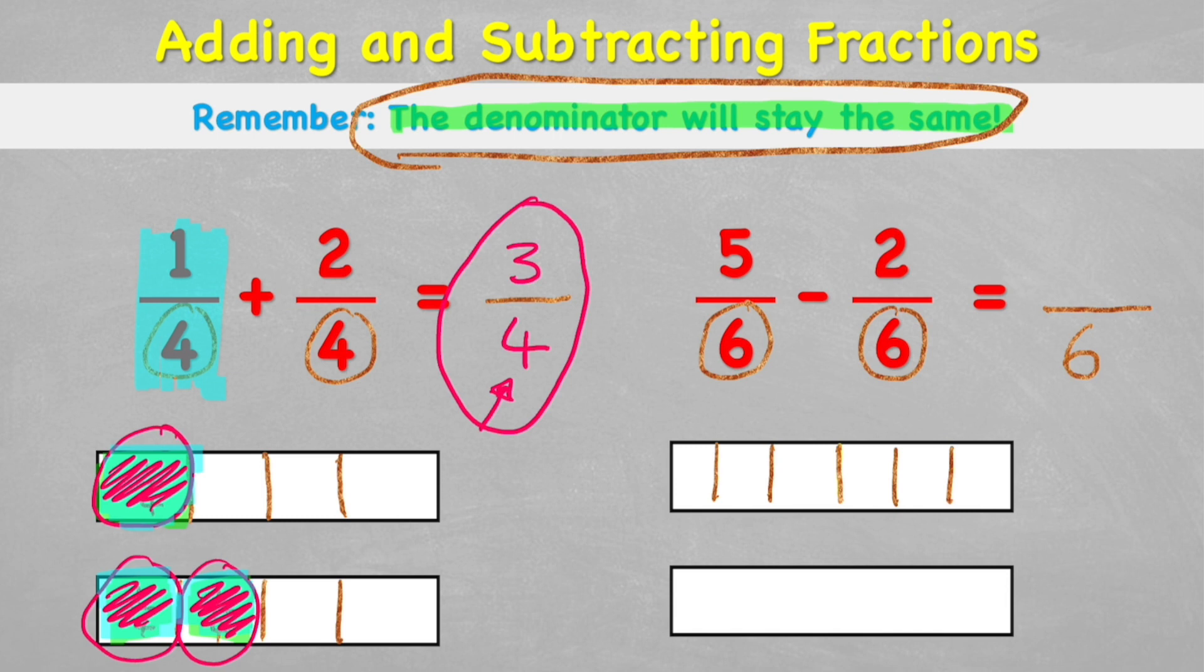And in the first fraction, I have one, two, three, four, five sixths. But then I'm taking away two sixths. So I don't need my second chocolate bar here because I'm not adding. I'm actually taking away. So what I'm doing is I'm removing two of these sixths. So I could remove this one and I could remove this one. I could take them away. And how many does that leave me with? Well, I have one, two, three left over. So my answer to five sixths subtract two sixths is three sixths.